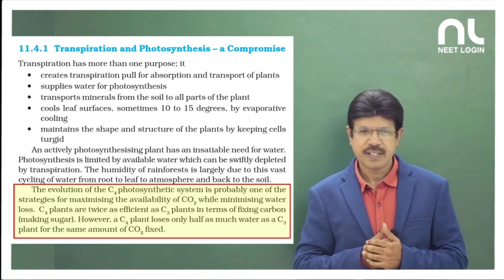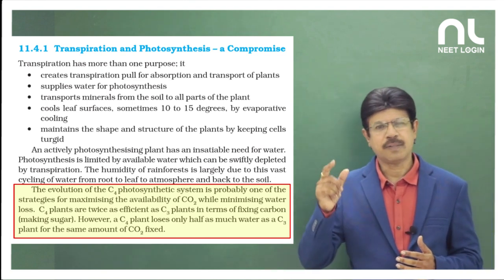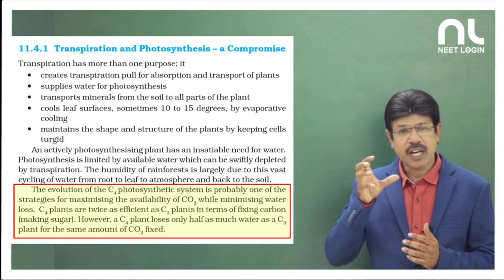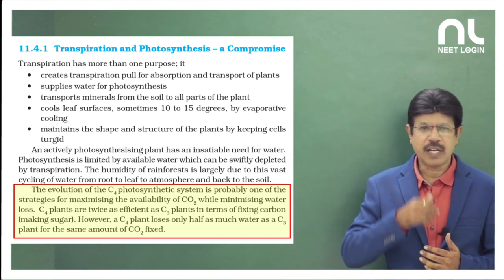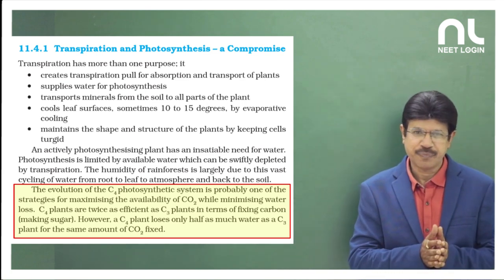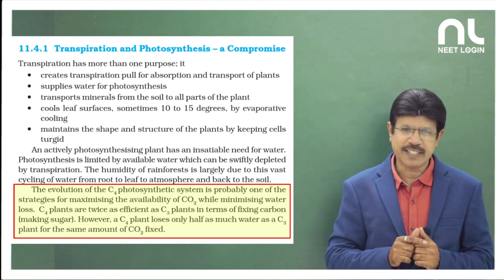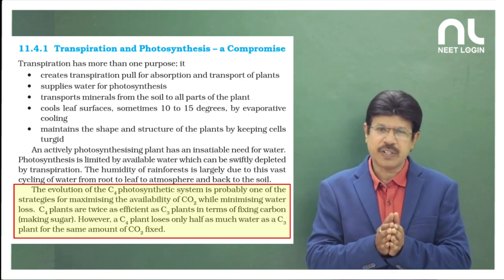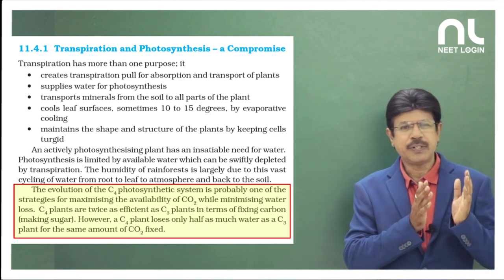Why? In C4 plants, there is an enzyme — PEP carboxylase, phosphoenol pyruvic carboxylase. It is a highly efficient and fast enzyme, and it has affinity only for carbon dioxide. In C3 plants, RuBisCO has affinity for both carbon dioxide and oxygen, so stomata have to be kept open for a long time. In the case of C4 plants, PEP carboxylase has affinity only for carbon dioxide, so it absorbs carbon dioxide very quickly and stomata need not be kept open for a long time. That is why water usage efficiency is high when compared to C3 plants.